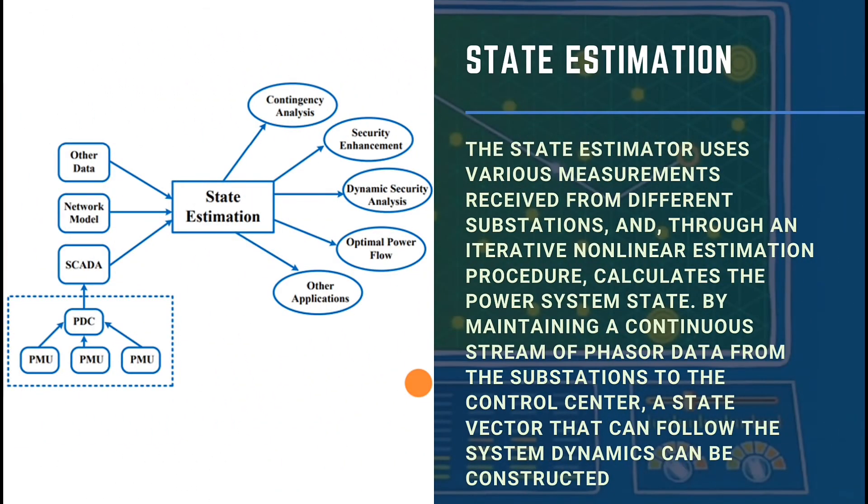State estimation: The state estimator uses various measurements received from different substations, and through an iterative nonlinear estimation procedure, calculates the power system state. By maintaining a continuous stream of phasor data from the substations to the control center, a state vector that can follow the system dynamics can be constructed. For the first time in history, synchronized phasor measurements have made possible the direct observation of system oscillations following system disturbances.